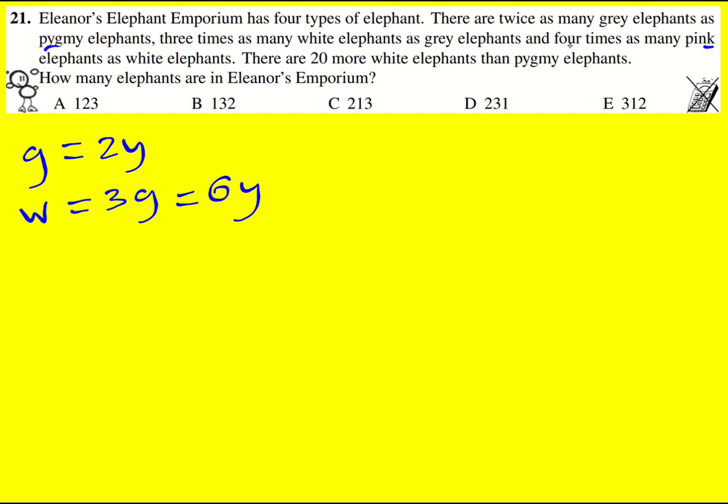Right, and then there are four times as many pink elephants as white elephants, so K for the number of pink elephants is equal to 4W, and that's going to be 4 times 6Y, so 24Y. So I am managing to get everything in terms of the pygmy elephants.